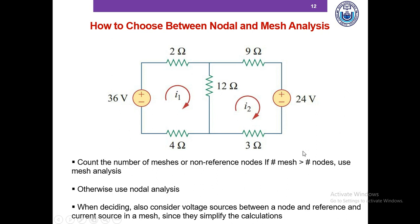Note there is a typo — it should read: if the number of meshes is less than the number of nodes, use mesh analysis; otherwise use nodal analysis. For example in this circuit, nodal analysis would require five unknowns and five equations, but mesh analysis only needs two equations and two unknowns. So count the number of meshes and non-reference nodes and do whichever analysis requires fewer equations.